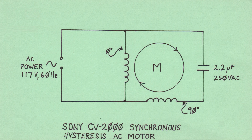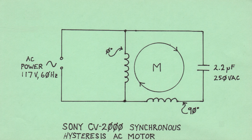Note that the motor in this diagram has two coil windings — one labeled as zero degrees and the other as 90 degrees. This refers to the AC phase presented to the two windings. The zero-degree winding is connected directly to the AC line; the 90-degree winding sees the AC after it has passed through a capacitor placed in series with it. This is called quadrature, a term that implies a 90-degree relationship between any two terms.